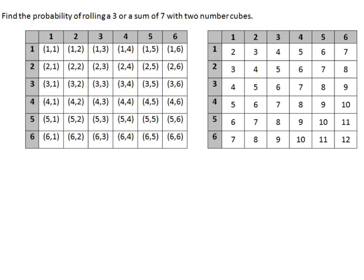In the last example, we find the probability of rolling a three or a sum of seven with two number cubes. Notice this is rolling a three — not a sum of three. Rolling a three means anything in the column for three or the row for three. That covers six numbers in the column and six numbers in the row, but one was counted twice, so that's eleven out of thirty-six total for rolling a three.